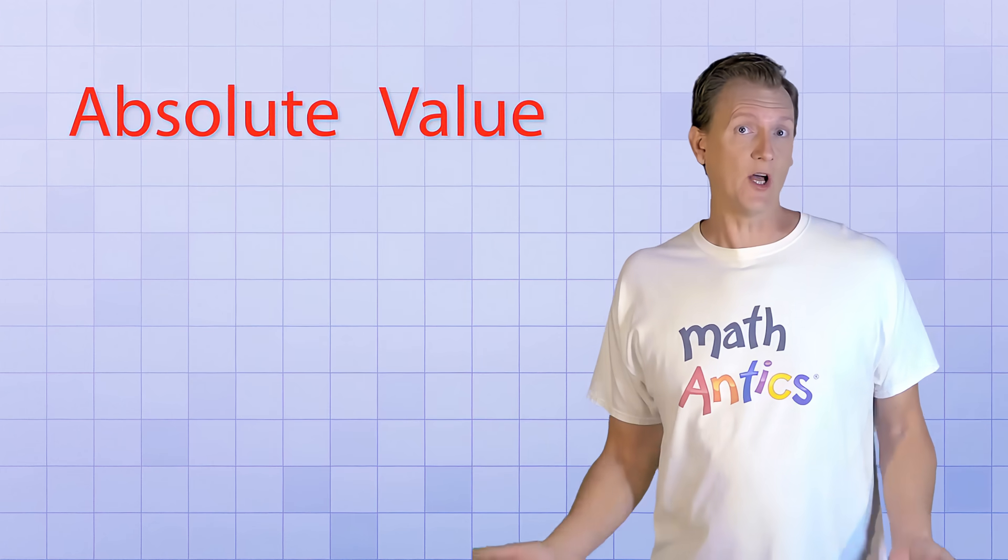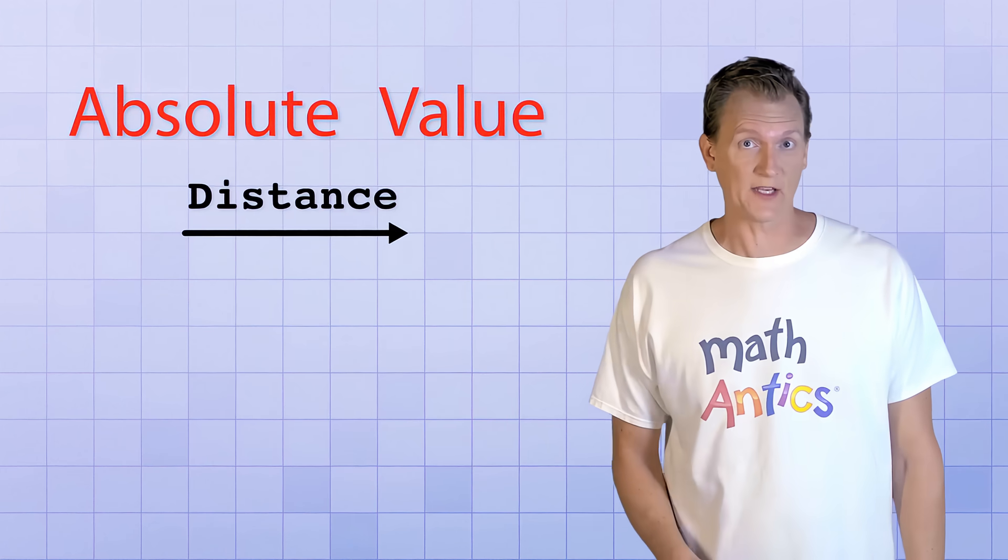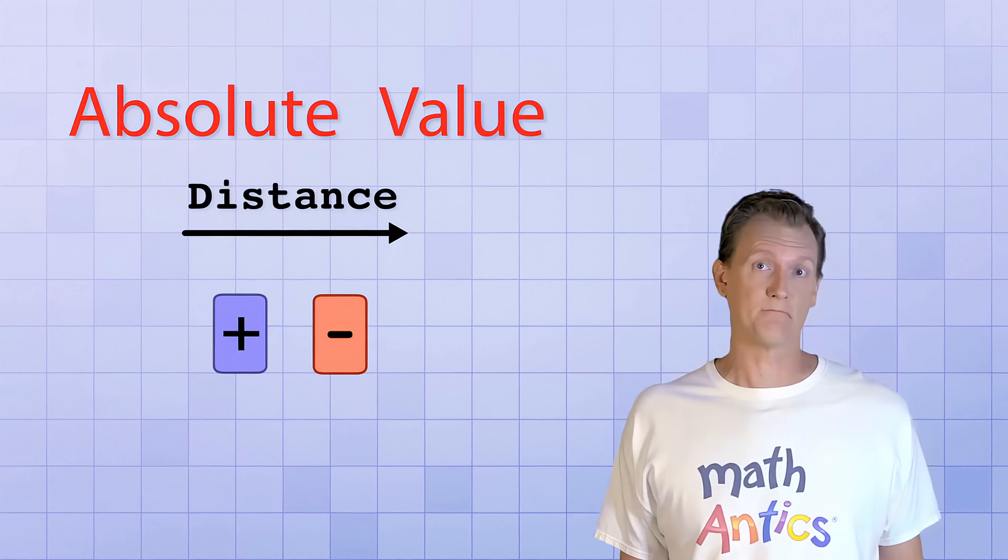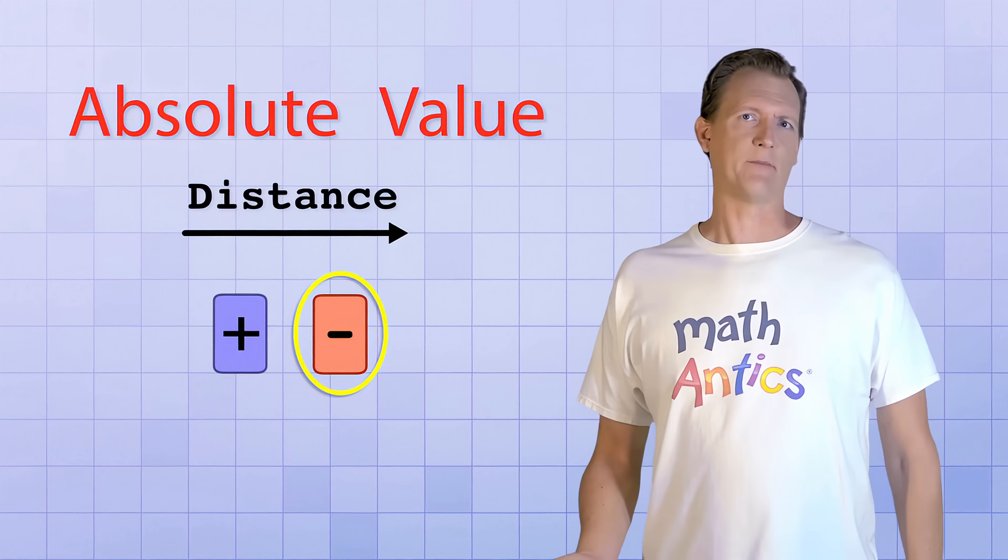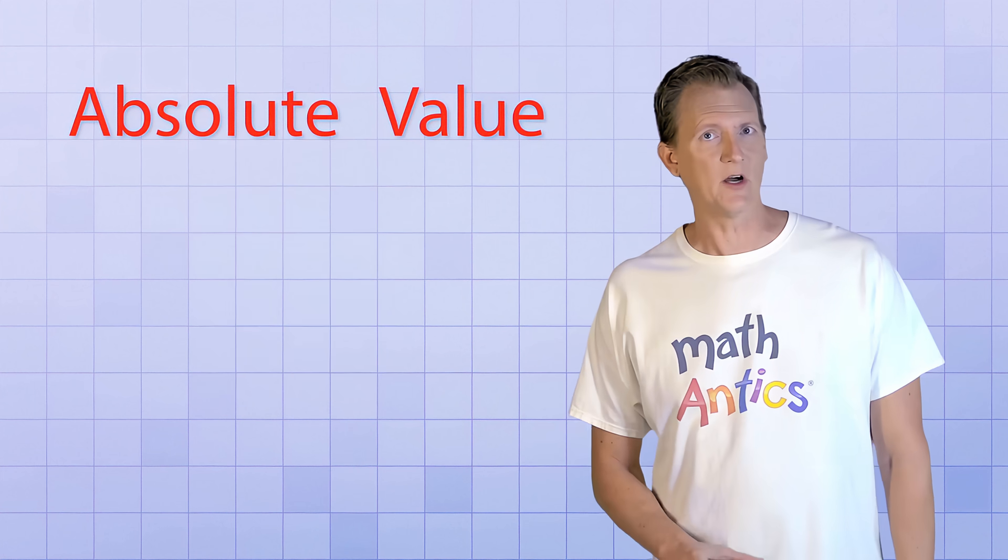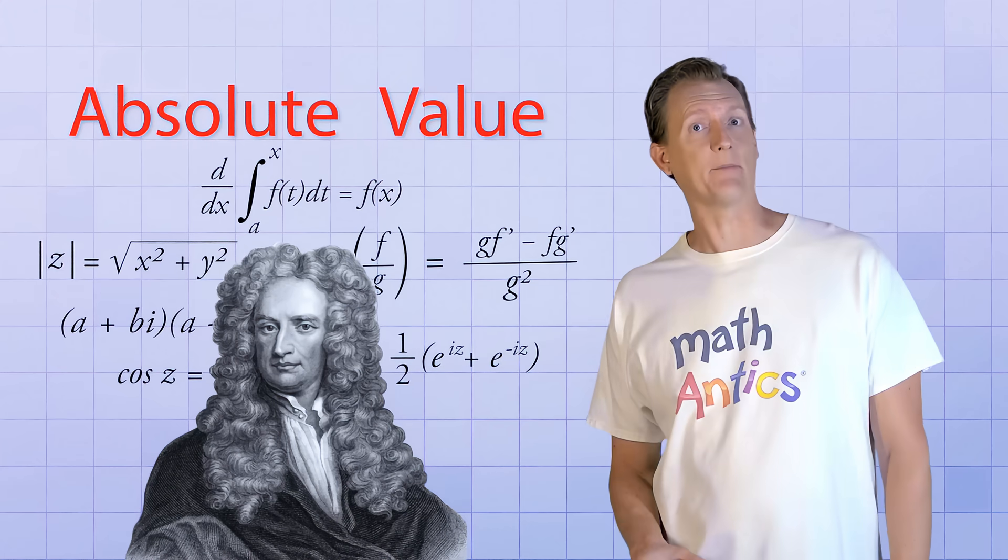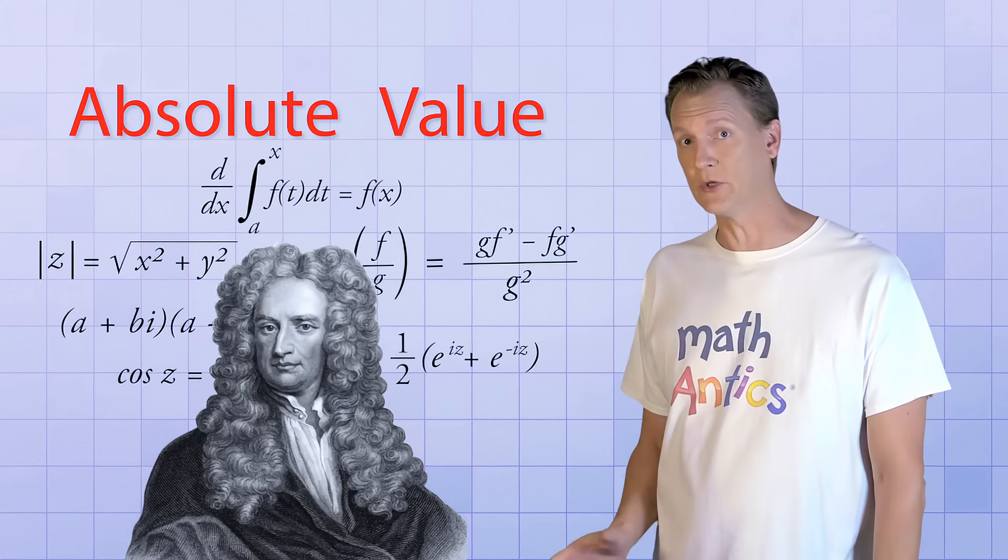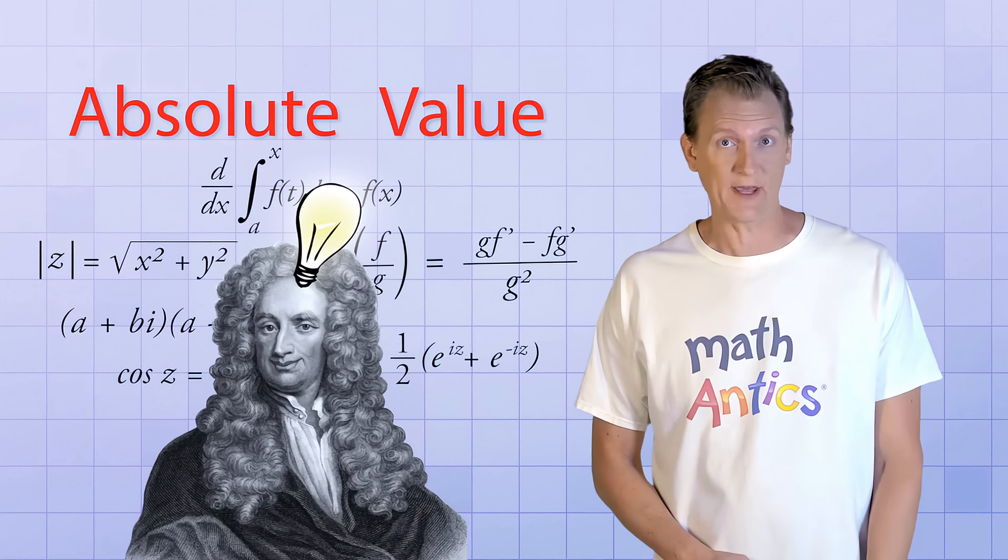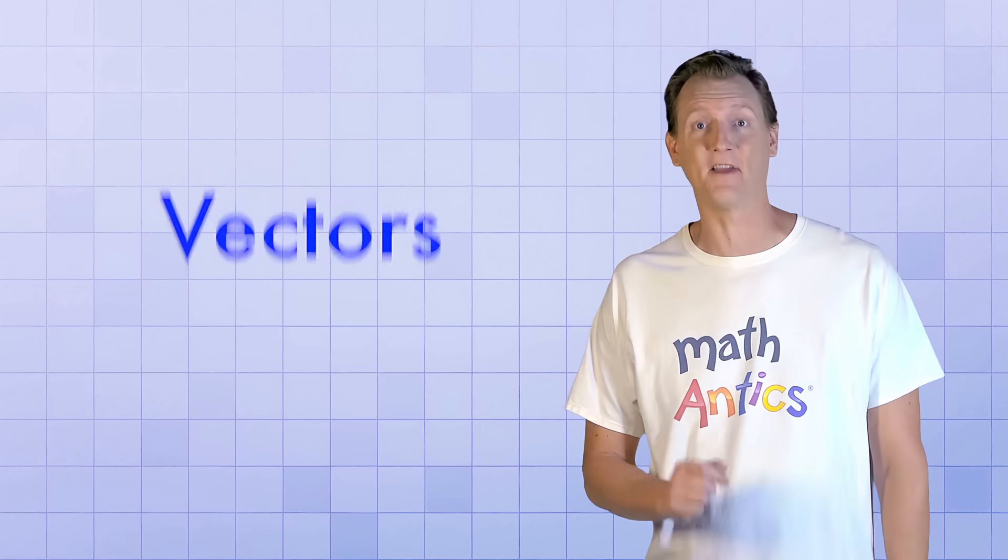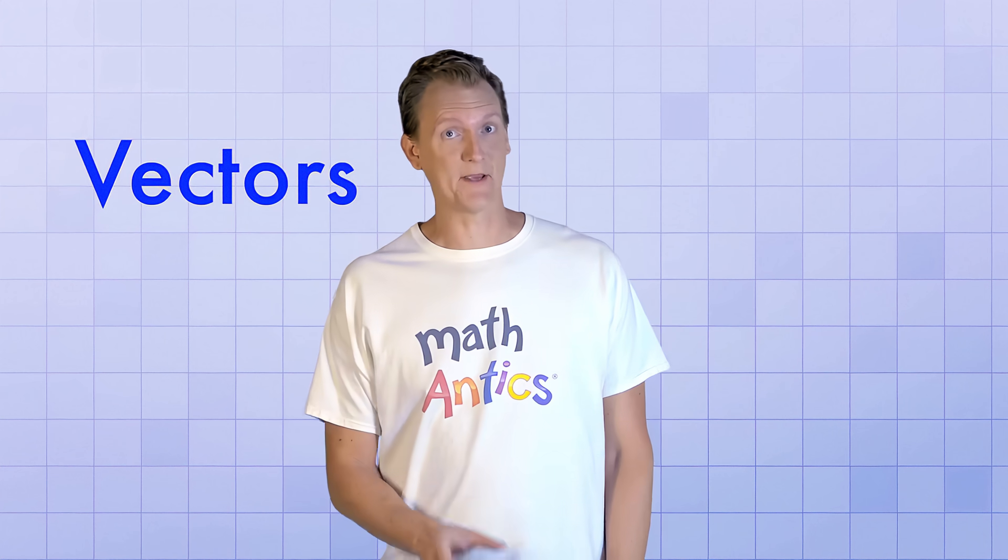Absolute value is a more general concept in math that actually has more to do with the idea of distance than it does with the idea of positive or negative numbers. It's usually introduced in basic math right after you learn about negative numbers. But absolute value is a concept that's even more useful and more interesting in advanced math. Because of that, I'm going to teach you about absolute value using an idea that you usually don't encounter until a little later on in your math journey. And that idea is vectors. The term vector might sound kind of technical, but they're actually really simple.